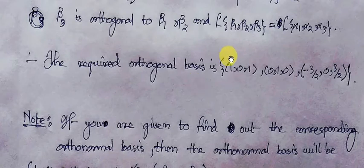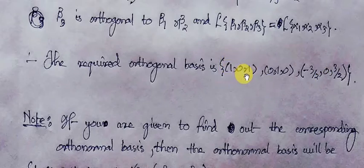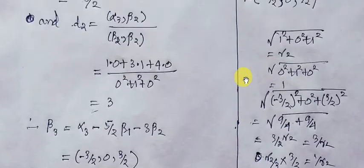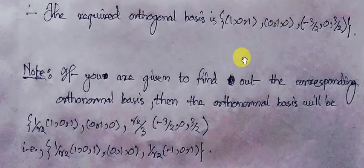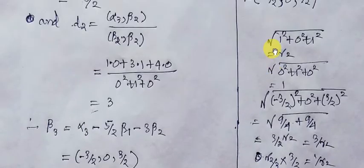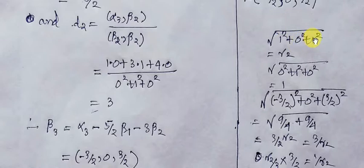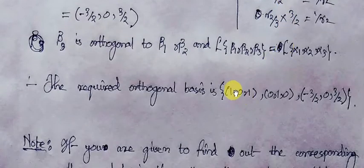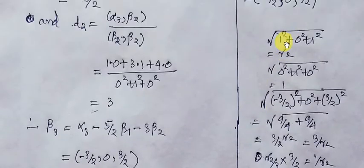We are now calculating the norm of each vector in this collection. The norm of the vector [1, 0, 1] is equal to the square root of 1 squared plus 0 squared plus 1 squared, where these are the components of the vector [1, 0, 1]. So the norm of this vector is root 2.